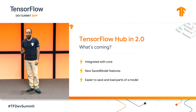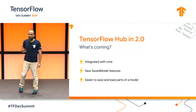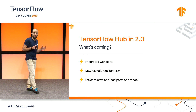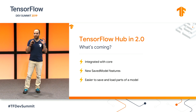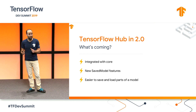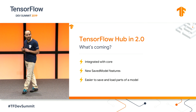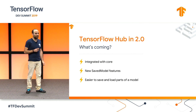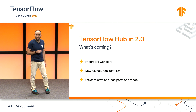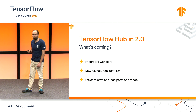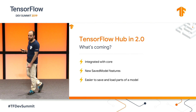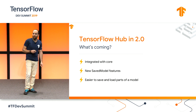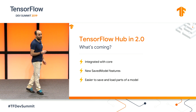So what's new? For the last few months, we have been making it even easier to use. This concept of saving a part of a model and then loading it back is getting integrated right in the core of TensorFlow. We have added SavedModel features that make it possible to share more than just signatures. And with eager execution, it becomes even easier to select the part of a network that gets exported.